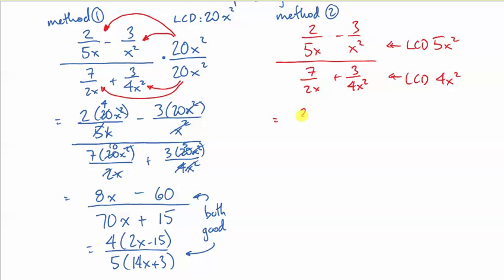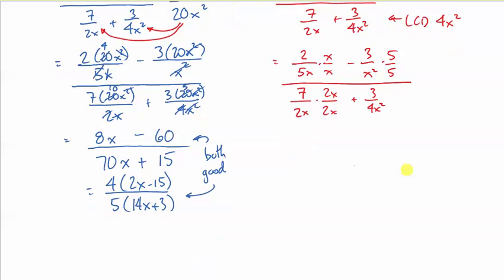So, this multiplies by x, and the second one multiplies by 5. That's in order to get my LCD. Now, this denominator needs 2x to make the LCD, and the second term is fine. It has 4x².